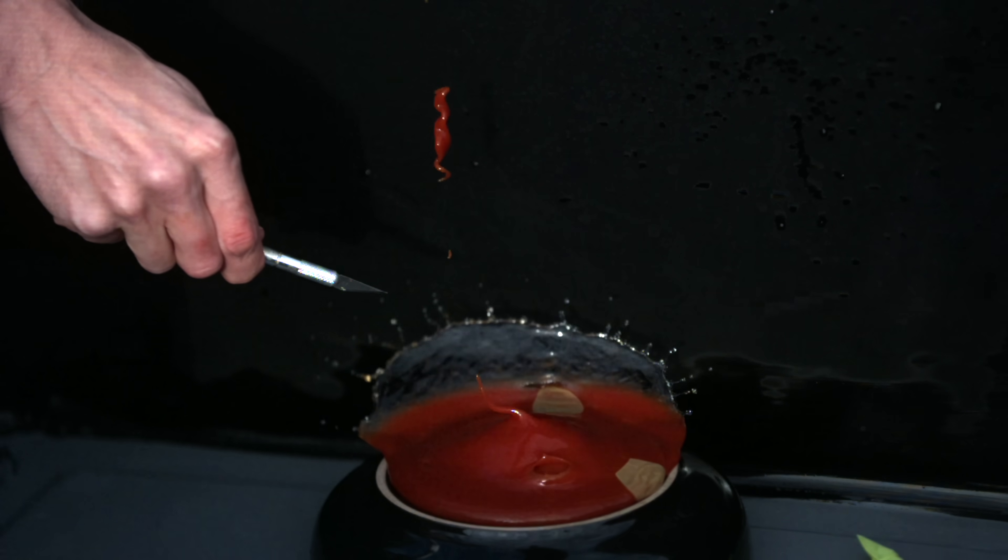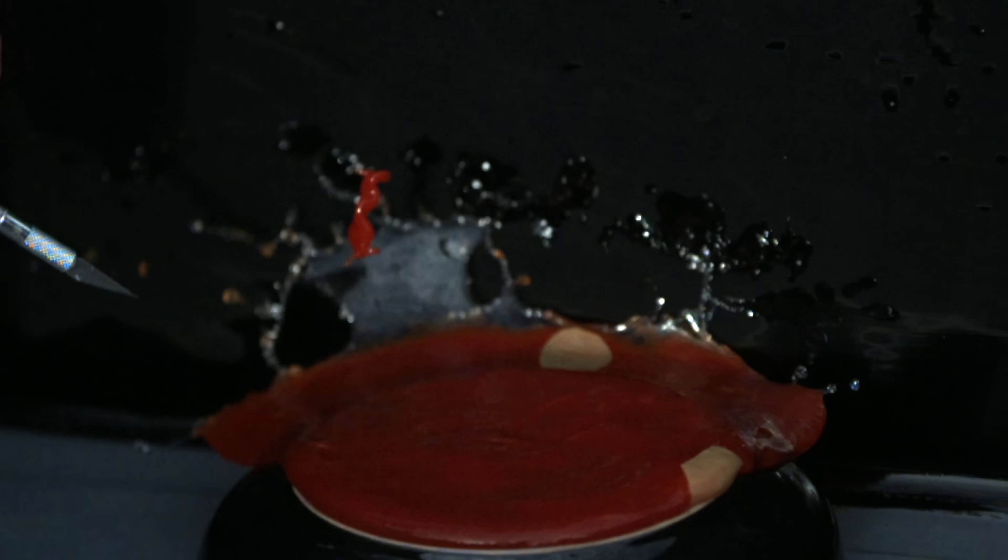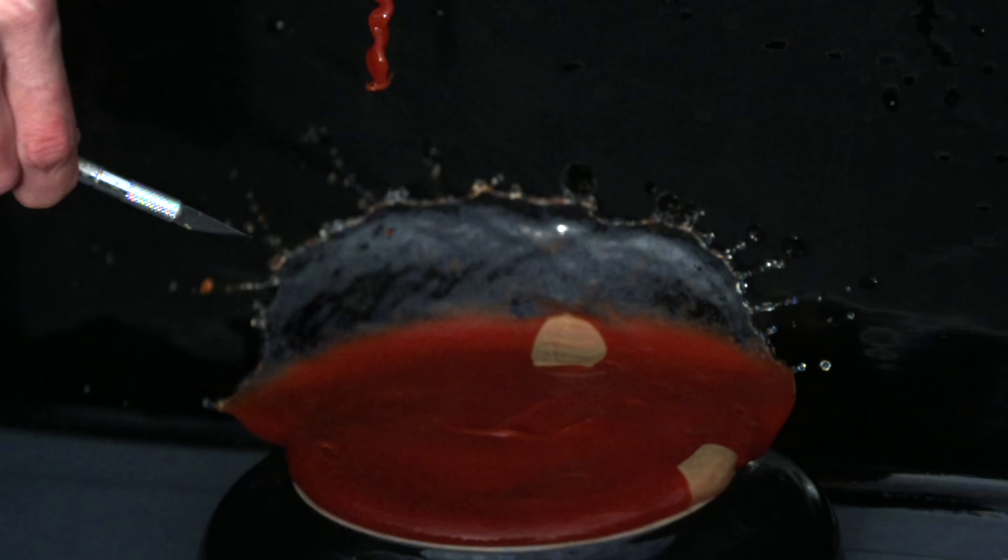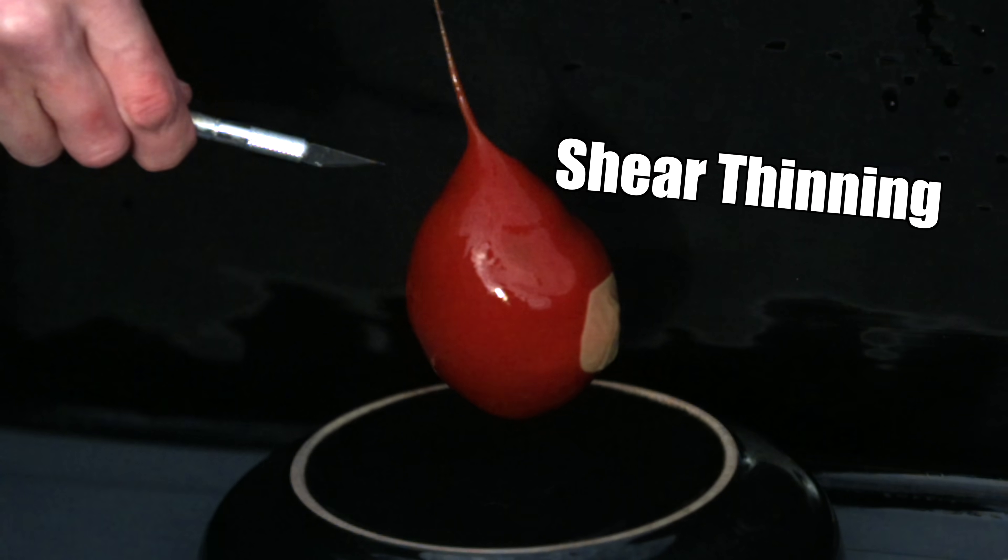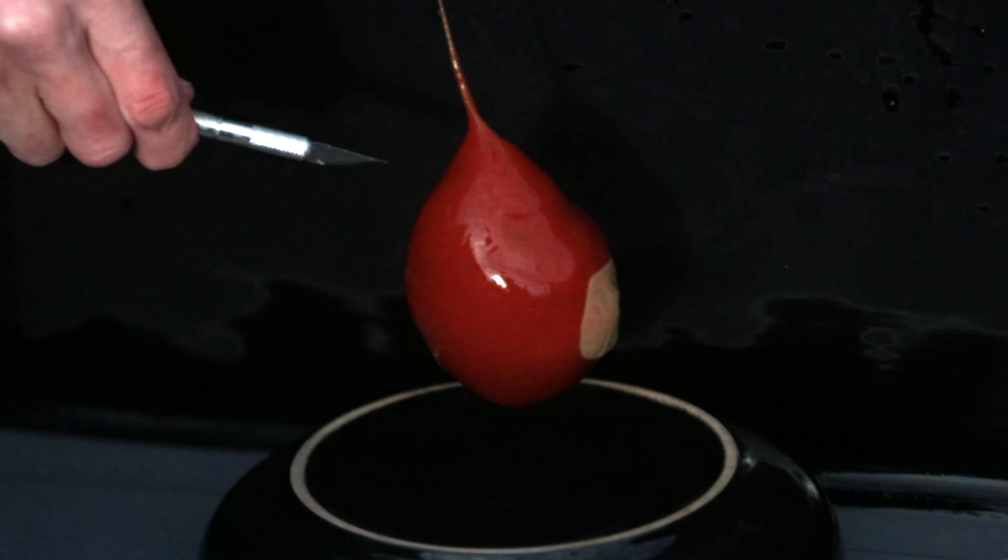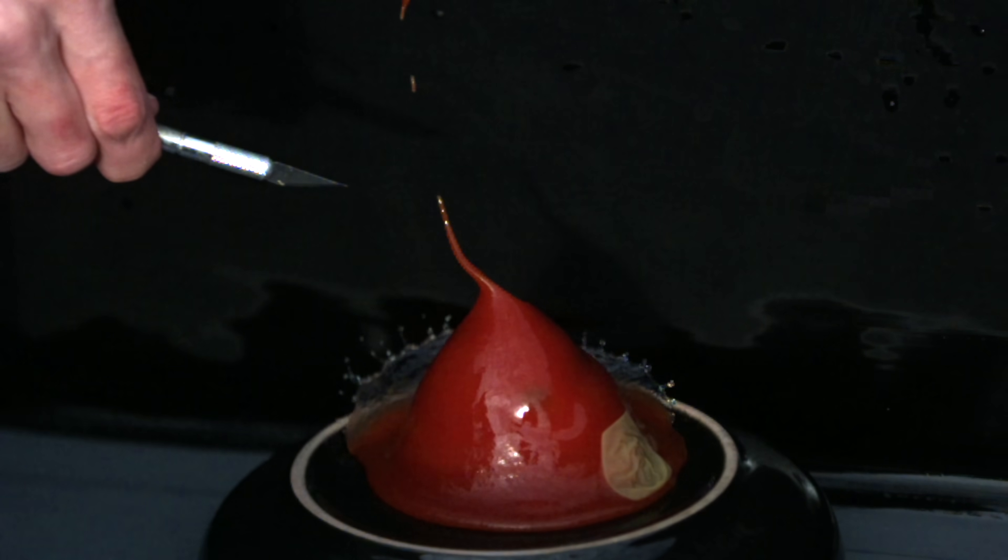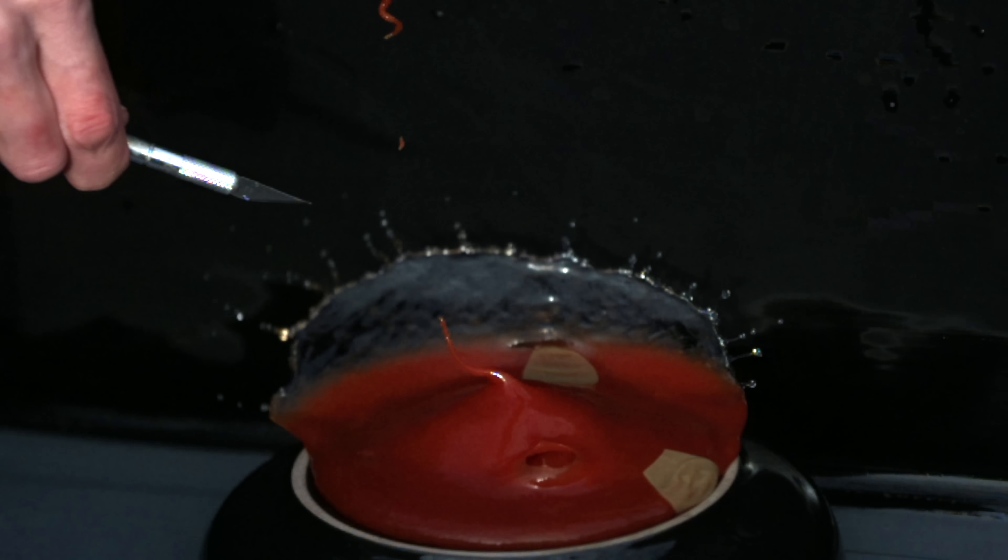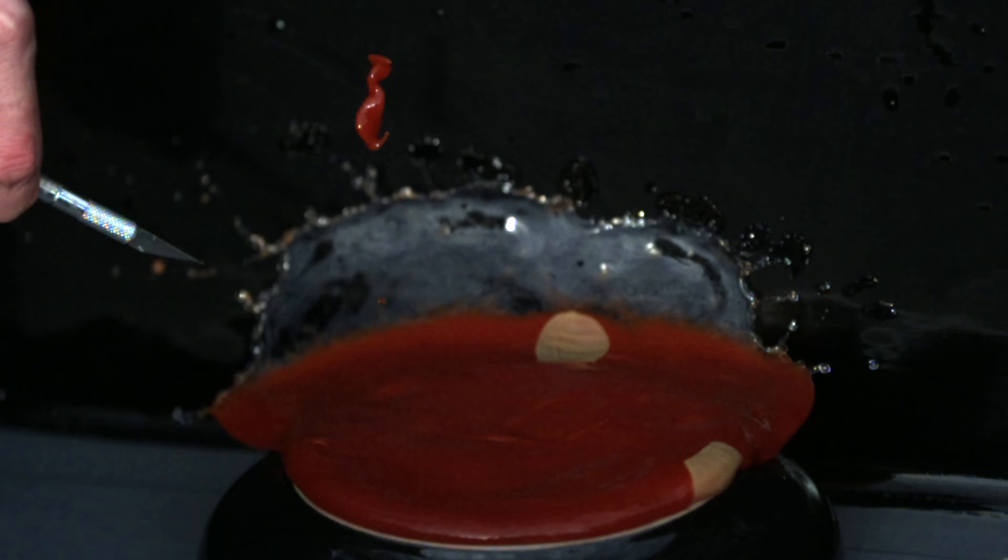The most well-known non-Newtonian fluid is corn starch and water or oobleck. That's what's called a shear thickening liquid. If you put it under pressure, it gets thicker and flows less. Ketchup is the opposite. It is a shear thinning liquid. If you put sudden pressure on it, it will become less viscous and more liquid. So under the pressure of falling like this, some of the ketchup has become extra liquidy and splashes out and it honestly looks kind of like water.